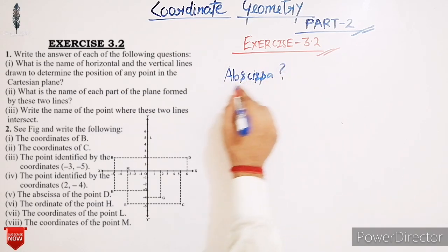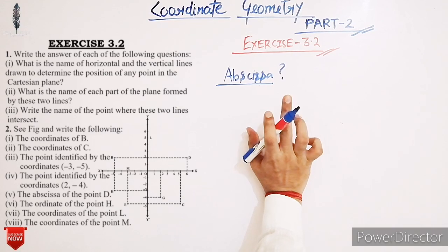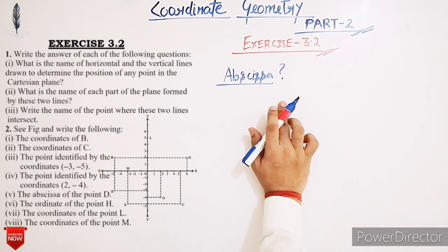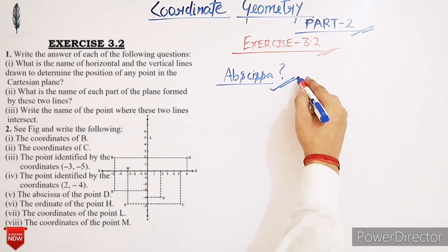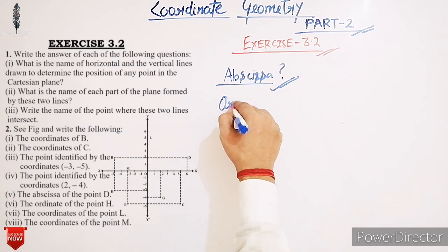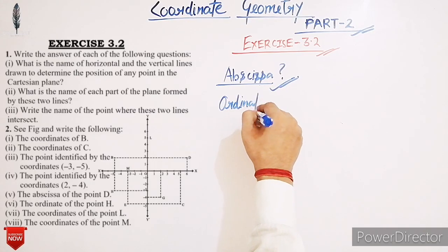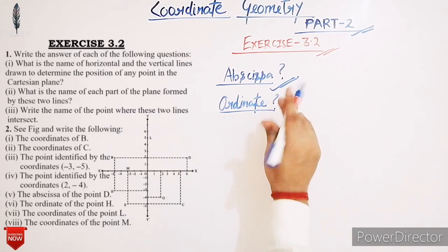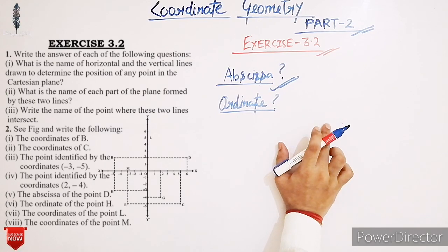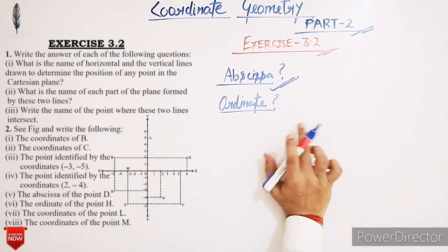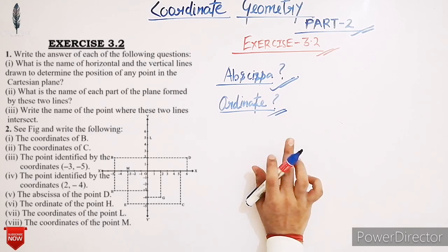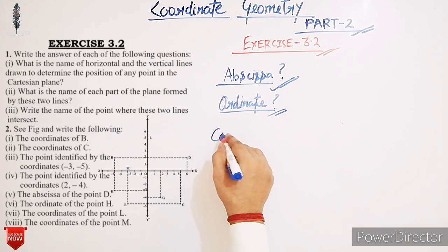First: what is abscissa? We have discussed in the previous class — the perpendicular distance of a point from the y-axis is called its abscissa or x-coordinate. Next: what is ordinate? The perpendicular distance of a point from the x-axis is called its ordinate or y-coordinate.